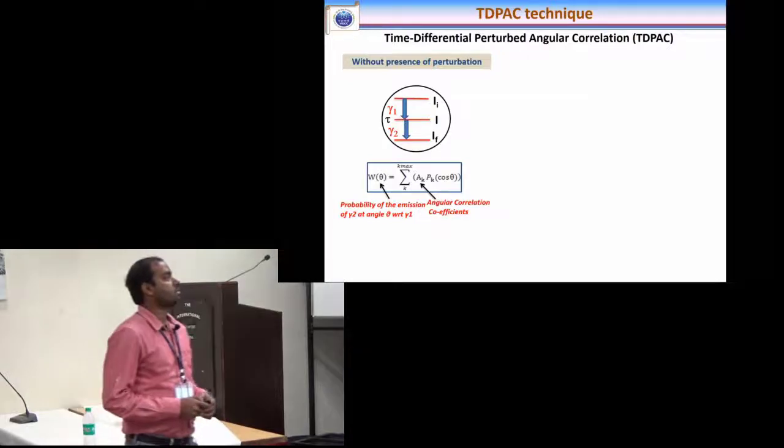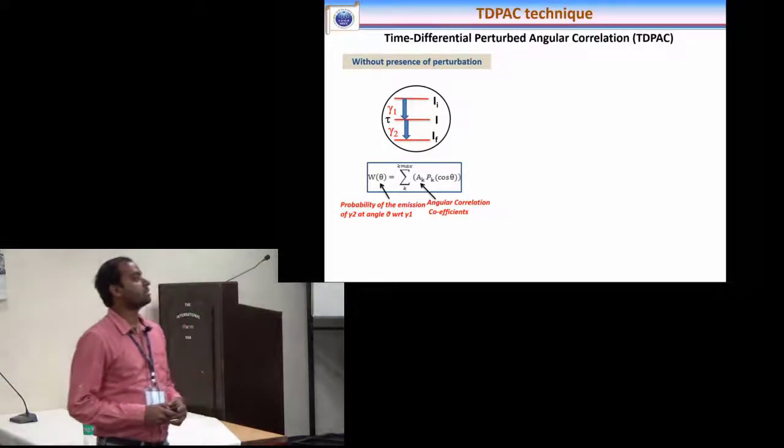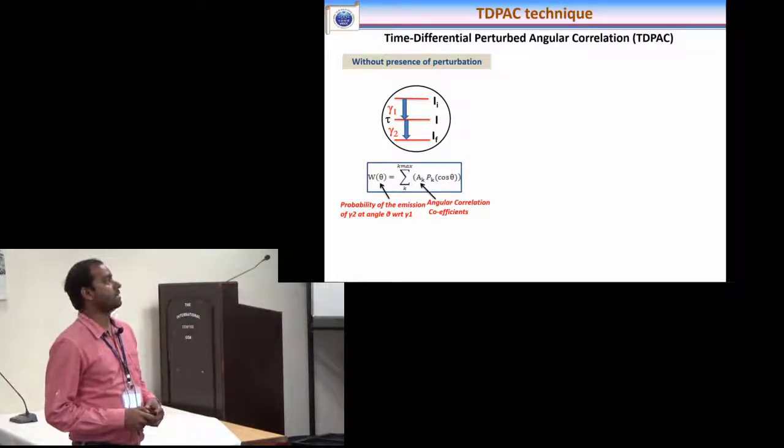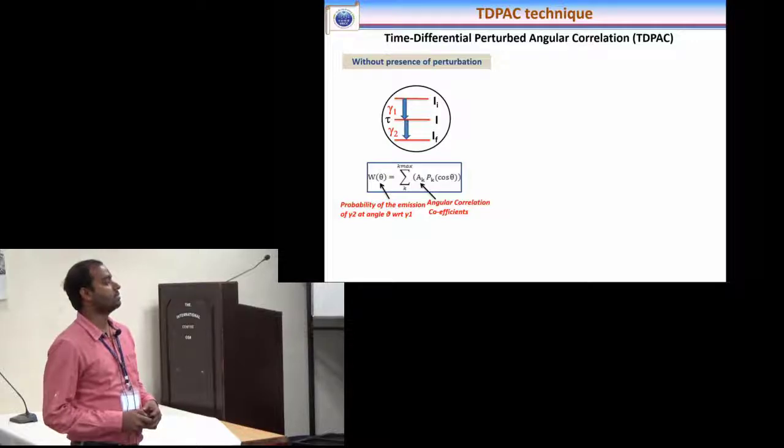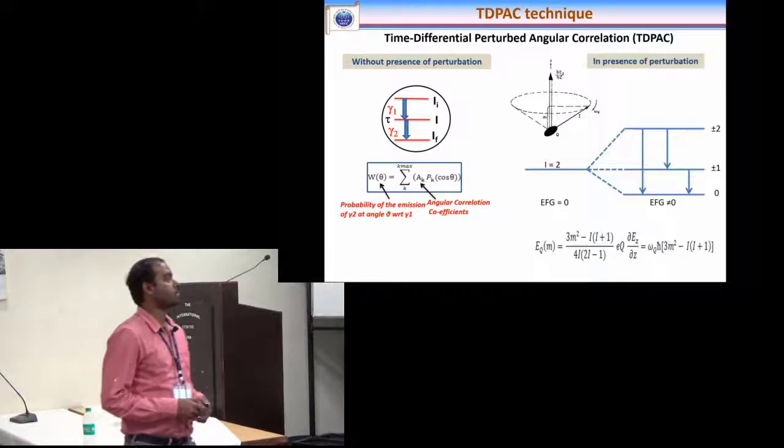We have used TDPAC technique to measure the quadrupole moment. The basic idea is that the correlation between two gamma rays can be written mathematically using this Legendre equation, where A_k P_k is the angular correlation and theta is the angle of gamma 2 with respect to gamma 1.